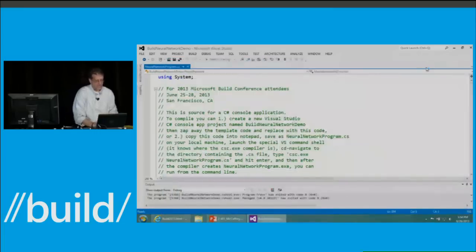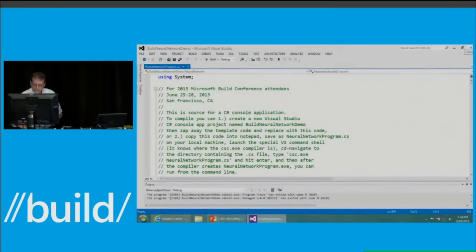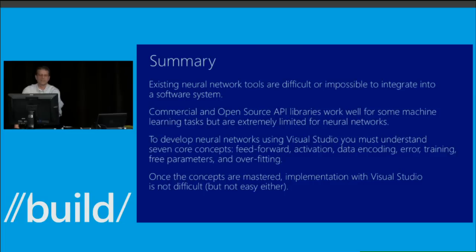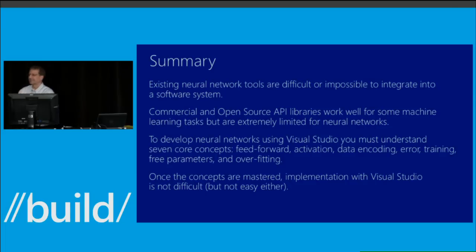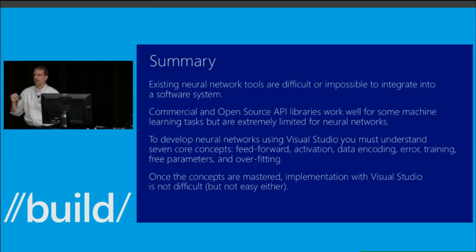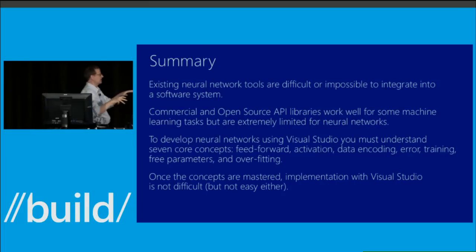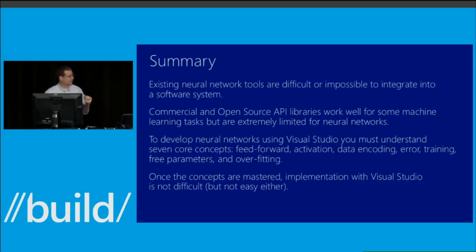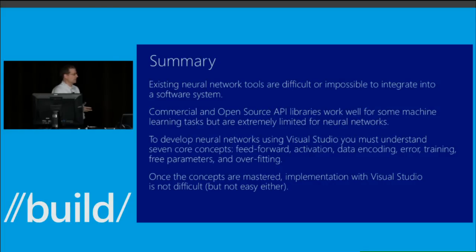End demo. Summary: There are existing neural network tools, but existing code available to you is highly flawed. Be exceptionally careful. If you use Weka, you run your stuff and save the result, but integrating it into your own system requires running the tool through a batch program, saving results as a text file — you end up with a bandaged-together solution. There are commercial API libraries, but they're pricey, and I have not been impressed by their quality.